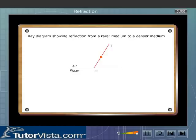Whenever a ray of light is travelling from a rarer medium to a denser medium, the refracted ray bends towards the normal.